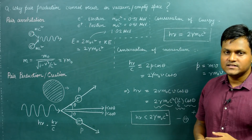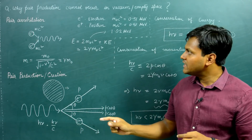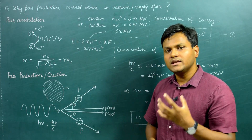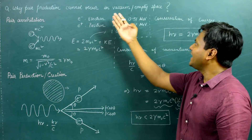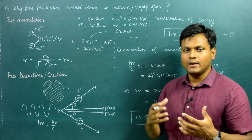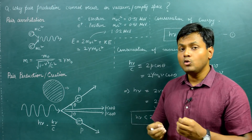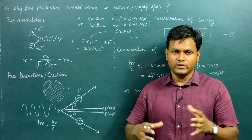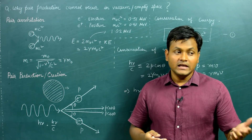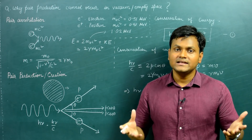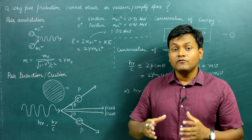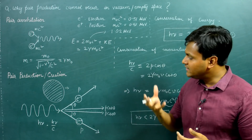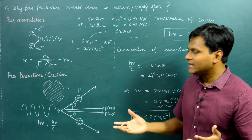Pair production can only happen in the presence of an external object like an atomic nucleus that can take some of the recoil to conserve energy and momentum simultaneously. One key distinction: pair annihilation can happen anywhere — its kinematics conserve energy and momentum — but pair production requires an external atomic nucleus. This is also one of the most common ways extremely high-energy radiation interacts with matter. For low-energy radiation: photoelectric effect; even lower: Rayleigh scattering; medium energy: Compton effect; extremely high energy (much greater than 1.02 MeV): pair production.